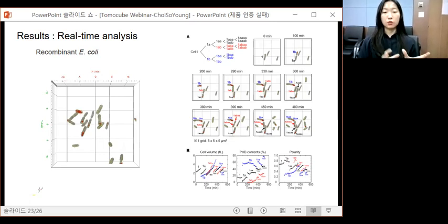And this movie corresponds well to the result that the E. coli cell shows higher polarity and negative correlation between polarity and PHA contents in the previous slide. Look at the right side. The dynamic changes shown in the time-lapse movie were also quantitatively analyzed at the individual cell level.